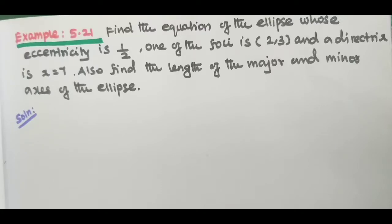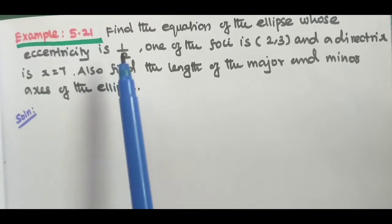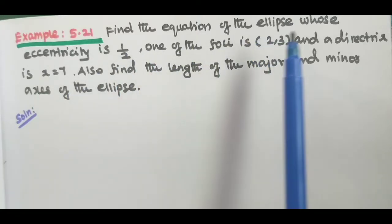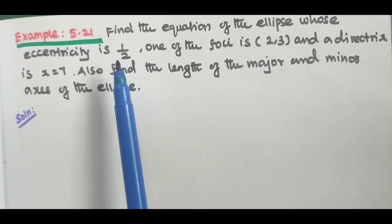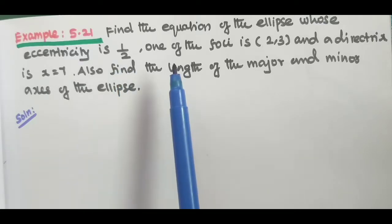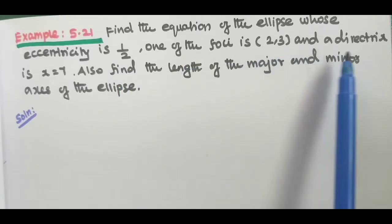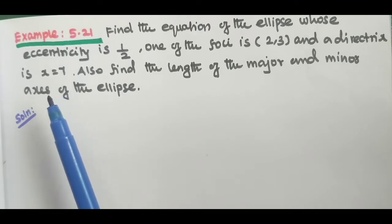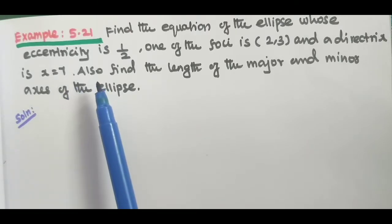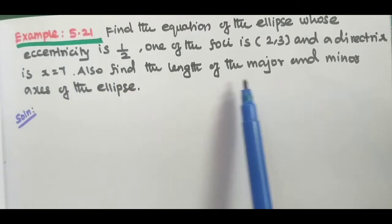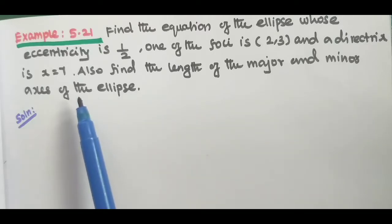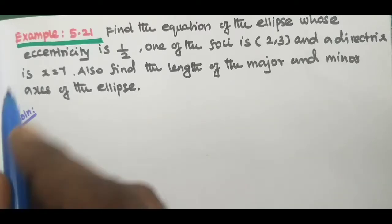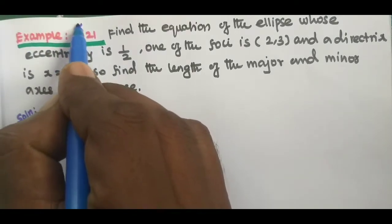Hi students, this is Sudharan here. Example 5.21: find the equations of the ellipse whose eccentricity is 1/2, one of the foci is (2,3), and the directrix is x = 7. Also find the length of the major and minor axis of the ellipse. This is a very important question.